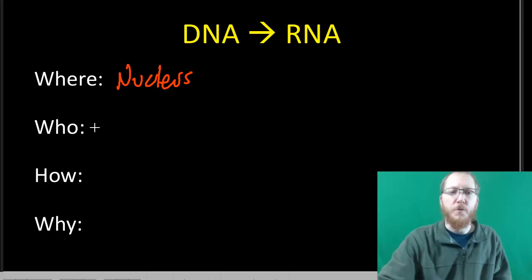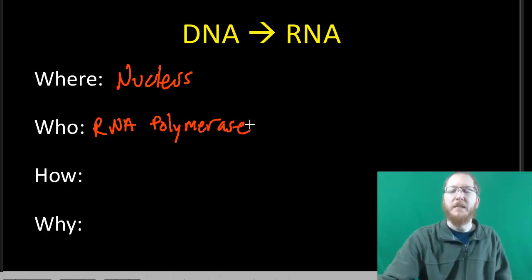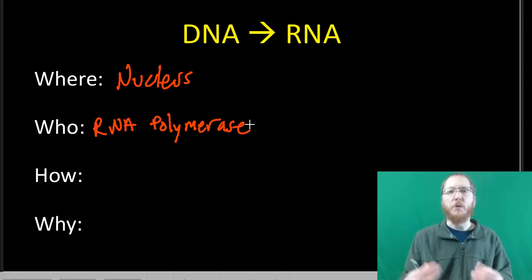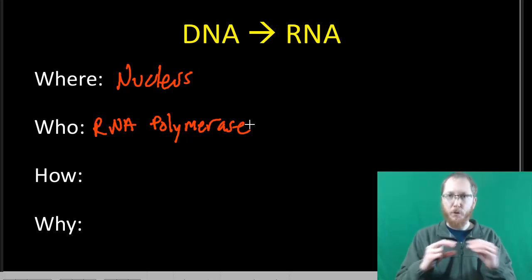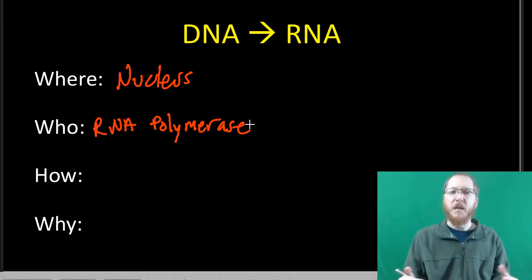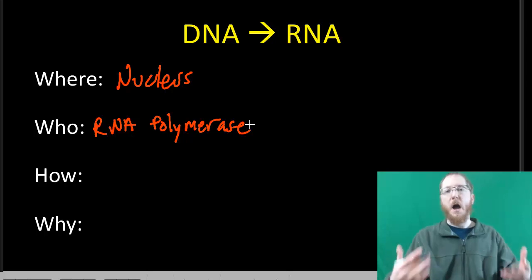For who's doing it, it'll be an enzyme called RNA polymerase. If you remember from replication, when we made DNA make a copy of itself, we used DNA polymerase to build a new strand. In this case, because we're building RNA, we call it RNA polymerase.